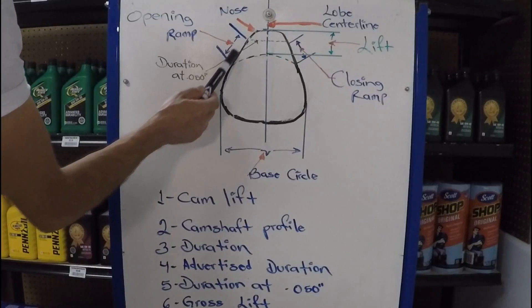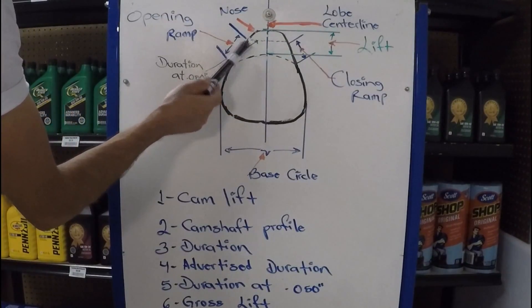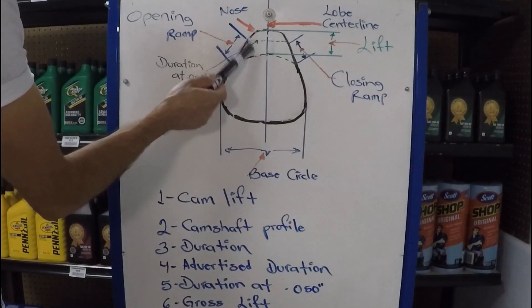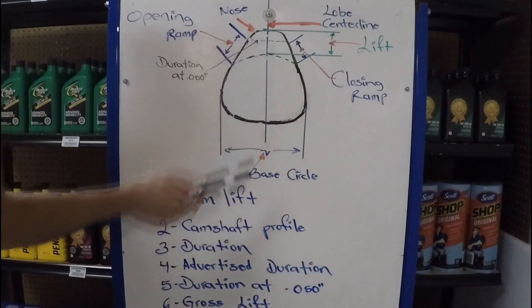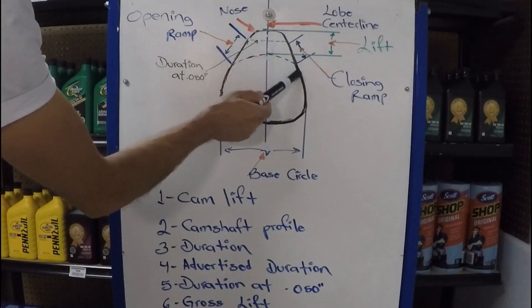Then you have duration. Duration is the length of time that the valve is going to be held off the valve seat, meaning it's open. So, this whole thing is the duration. Now, with that in mind, there are two types of duration that are commonly used. You got the advertised duration, which is the entire time.